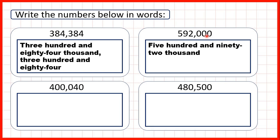here we have three zeros. So zeros in our hundreds, tens and ones. And that means that we don't need to write anything after the word thousand. So our number is just five hundred and ninety-two thousand.